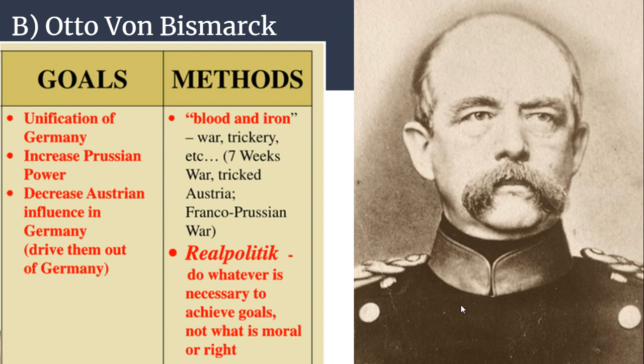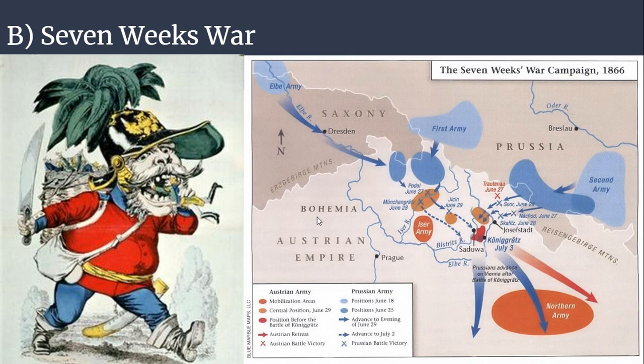Otto von Bismarck is going to be famous for adopting the style of realpolitik — the idea that there is really no morality in politics; you should instead pursue whatever means necessary in order to achieve your goals. In order to keep the Austrians out, he's going to provoke what's called the Seven Weeks' War by annexing Bohemia, which was formerly a tributary state of the Austrian Empire, into Germany. This provokes a military response from Austria, but the Prussian modernized military is going to absolutely obliterate Austria over the span of seven weeks.